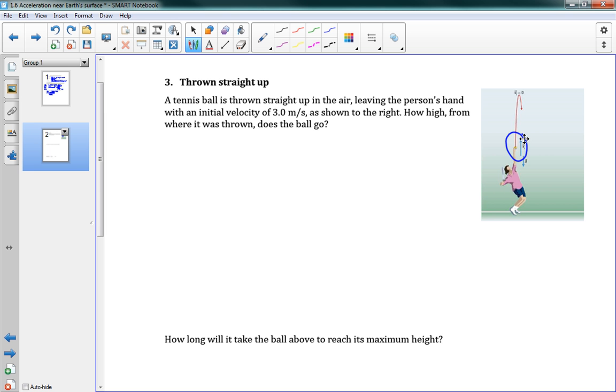How high from where it was thrown does the ball go? Notice, it doesn't look like we were given a lot of information at all. But we can write this out. Given: we know that vi... and now I am going to use some directions here. So vi is equal to 3.0 meters per second up.